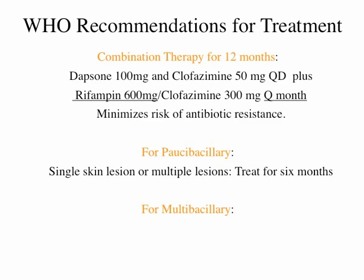The WHO recommends combination therapy for 12 months, initially with dapsone, clofazimine, and rifampin at 600 milligrams given every month. This minimizes risk of antibiotic resistance — if you treat with dapsone only, you tend to see a lot of dapsone resistance. For paucibacillary disease, which is pretty easy, dapsone alone can occasionally treat it, or dapsone and rifampin would probably work very well, and they currently recommend six months.